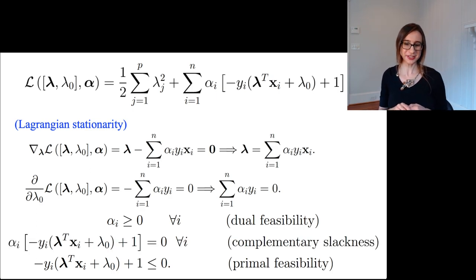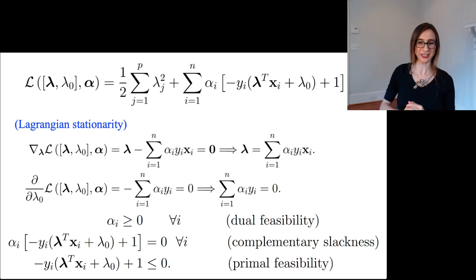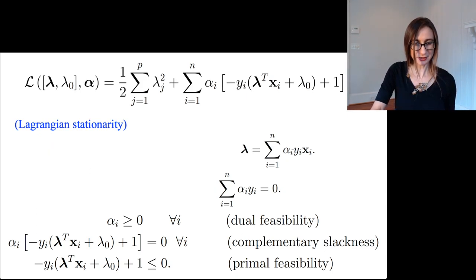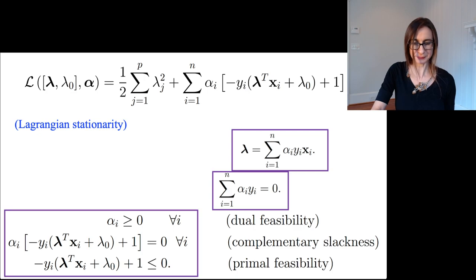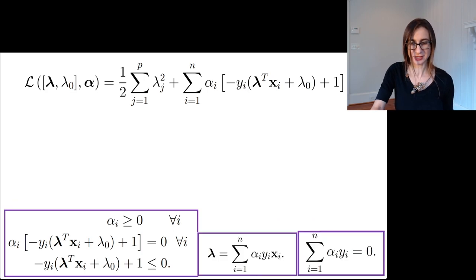Then the complementary slackness condition - this thing is like an infinitron laser against our alien enemies. We have all of these equations and I'm just going to put a box around them. This is our arsenal of weapons and we're going to use these things to smash this equation until we get the solution.